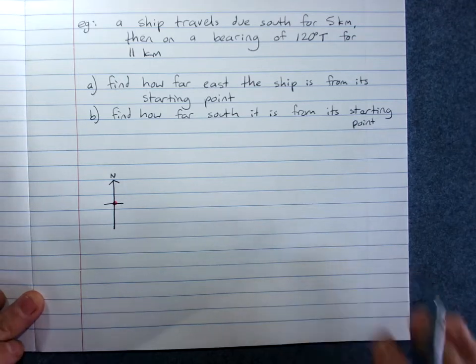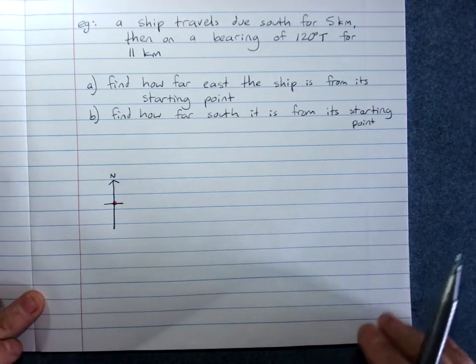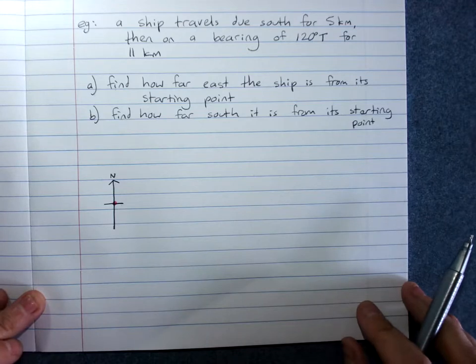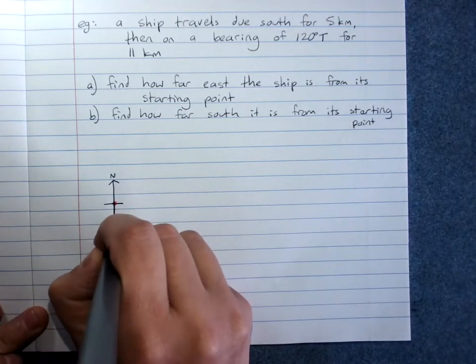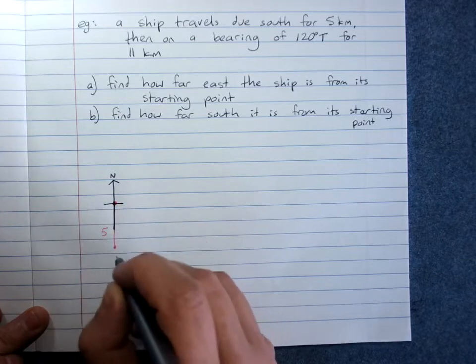You then draw the diagram showing what happened. So they traveled due south for 5 kilometres. We'll get to there and that's 5 kilometres.